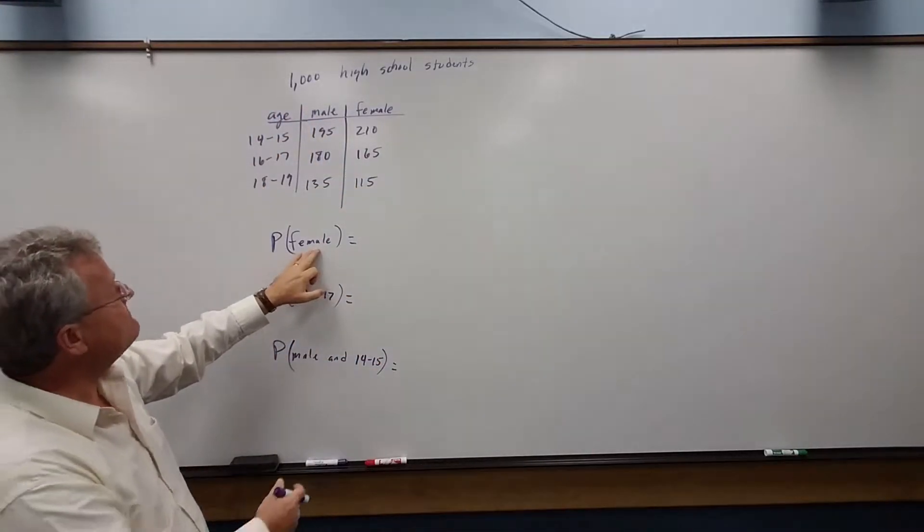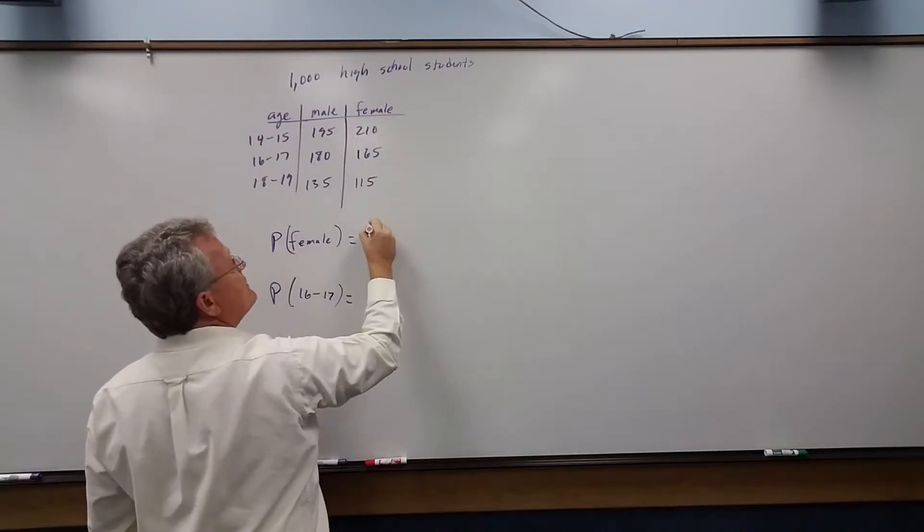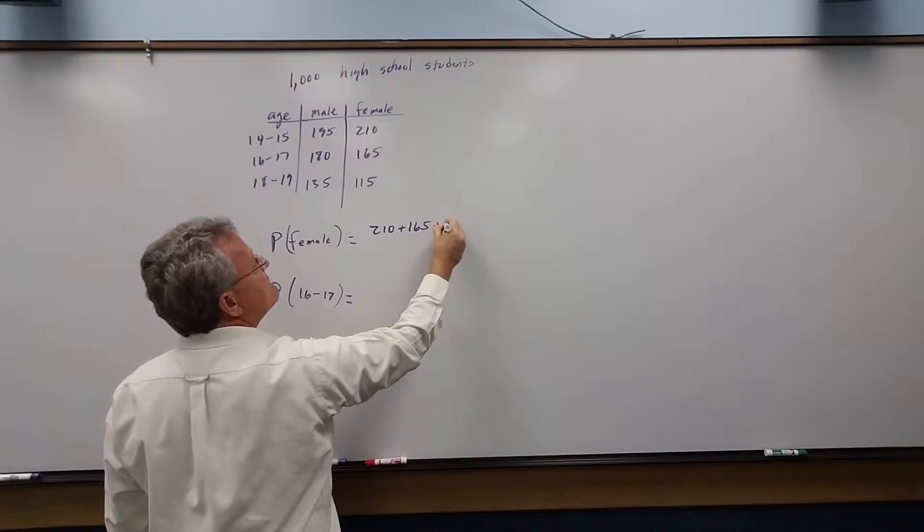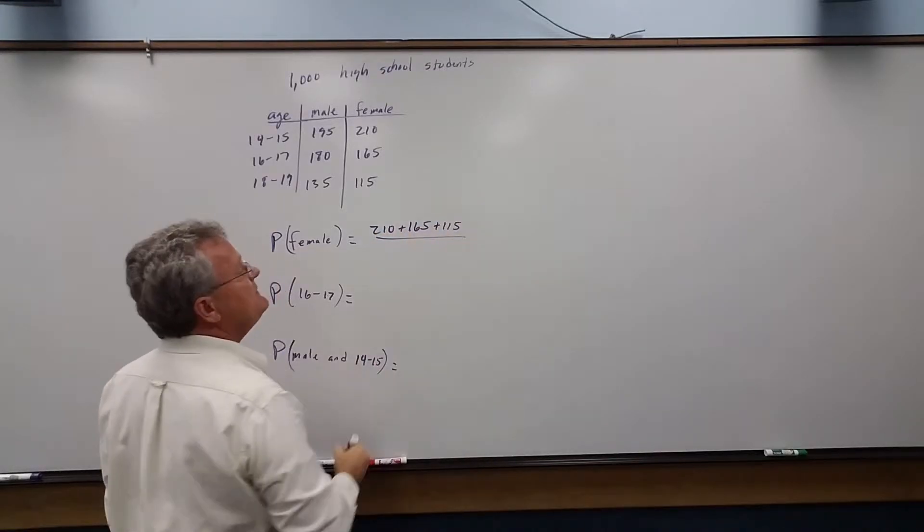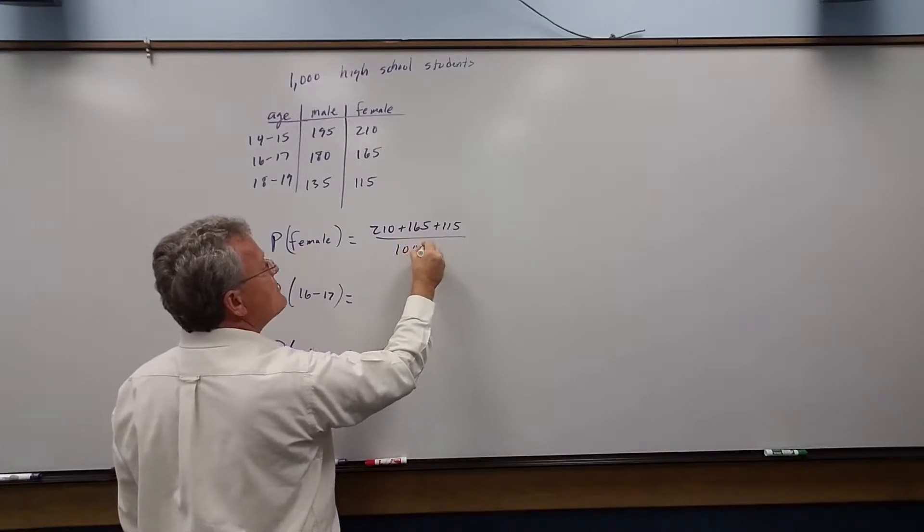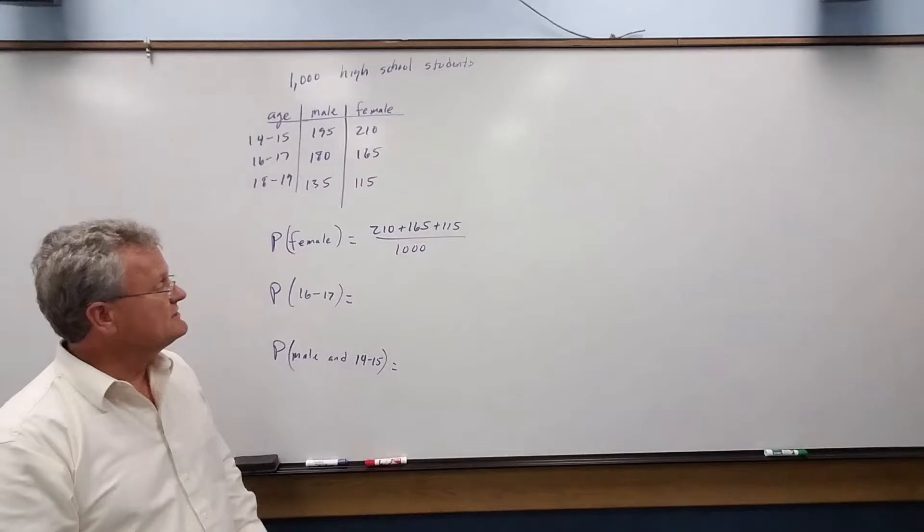So how many females are there altogether? The probability of getting a female is 210 plus 165 plus 115, divided by the total number, which is 1,000. And then we can add that up and write it as a decimal.